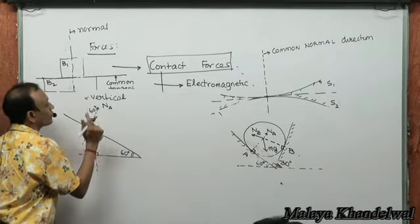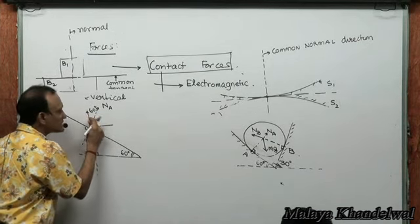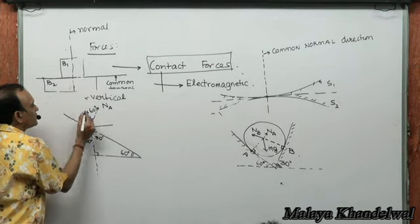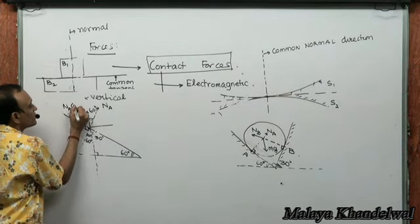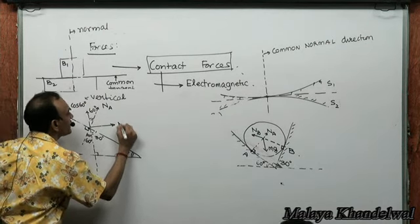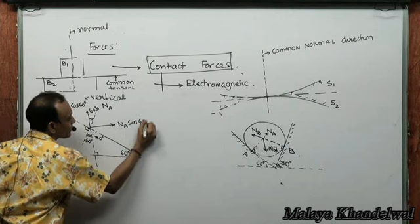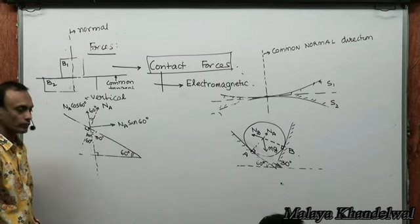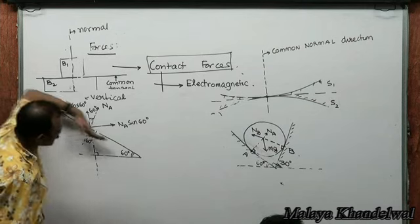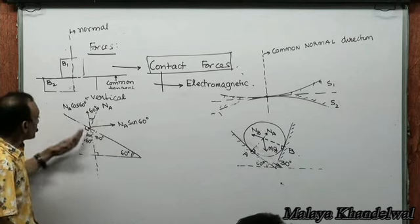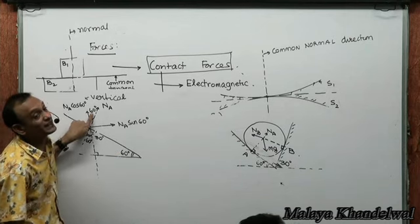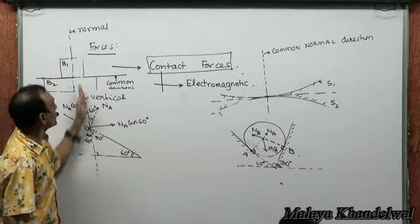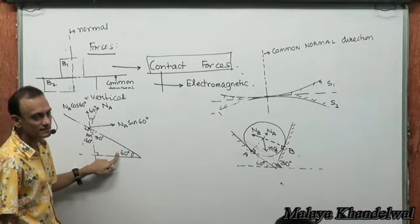NA can be resolved as NA cos 60° vertically and NA sin 60° horizontally. In general, if an inclined surface makes angle theta with the horizontal, the normal force has a horizontal component N sin theta and a vertical component N cos theta. Here theta is 60° for surface A.